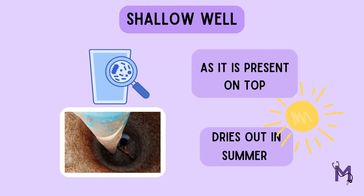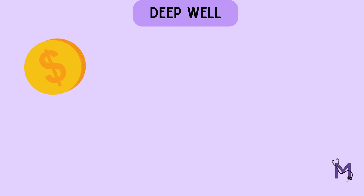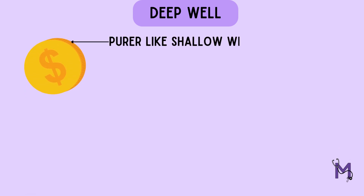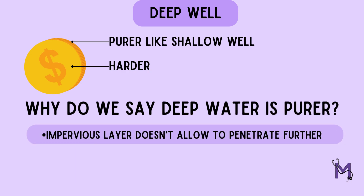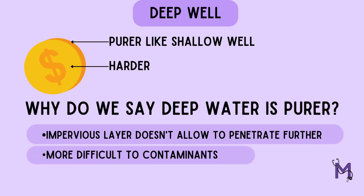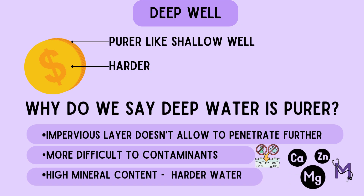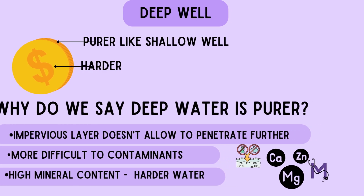The chances of water going dry in the summer are also high for shallow wells. On the other hand, deep wells tap water from below the first impervious layer, that is, from the second porous layer. The water from the deep well presents itself like a coin — on one side it is purer in comparison to shallow wells, and on the other side it is harder. The impervious layer does not easily allow water to penetrate further, and it is even more difficult for contaminants to enter past the first impervious layer. Also, since the wells are deep, there is a high amount of mineral content in the water, which is the reason for the water being hard.